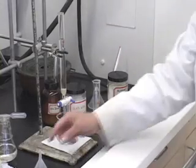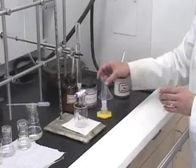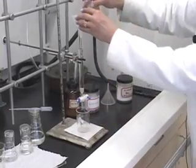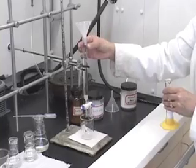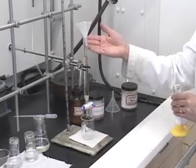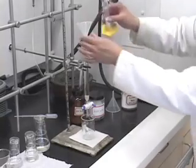Now, using the same funnel that you used to transfer hexane, we can transfer alumina. Place the funnel and hopefully the funnel is dry by now and also the inner surface of this column. If it is not, alumina is going to get stuck there, but we will have to just rinse it later with hexane.